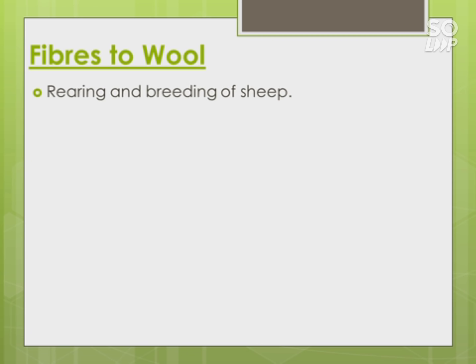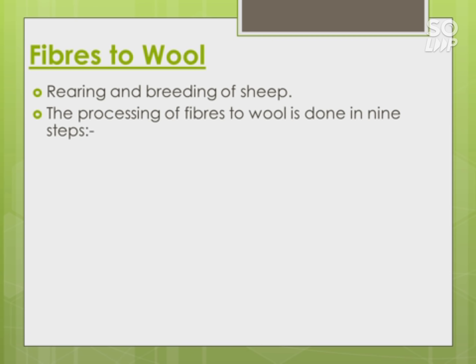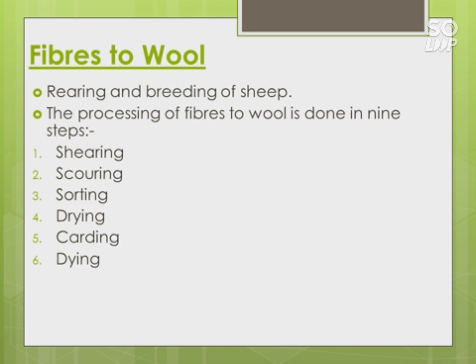Let us now understand the process of processing fiber to wool. It involves rearing and breeding of sheep, and the processing is done in nine steps: shearing, scouring, sorting, drying, carding, dyeing, roving, spinning, and weaving. Note that drying, carding, and roving are not given in the NCERT textbook, but have been included here for better understanding of this processing.